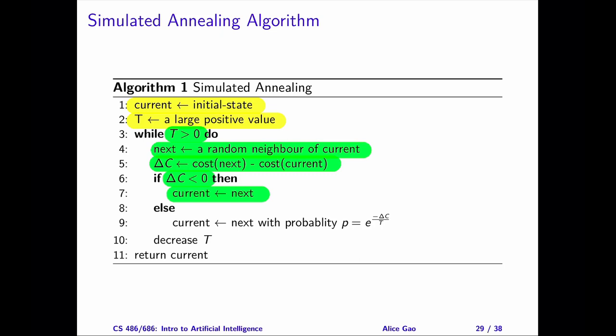Otherwise, if the neighbor is worse than the current state, we'll move to the neighbor with some probability. When the temperature reaches the minimum value, we will stop and return the current state.